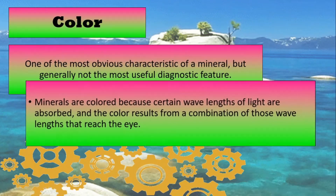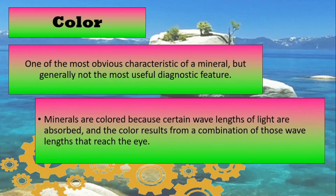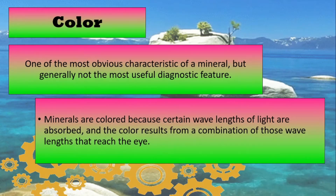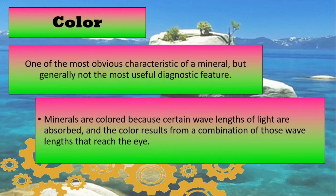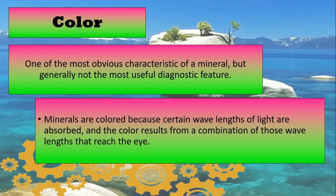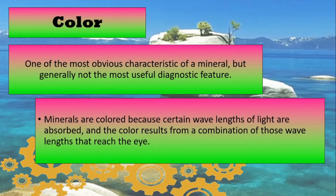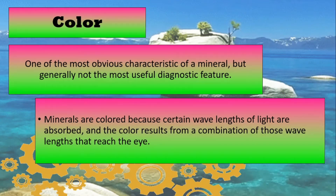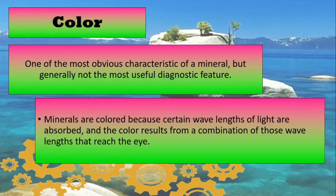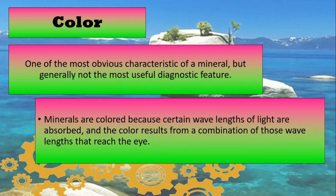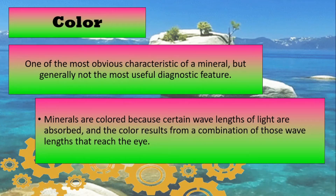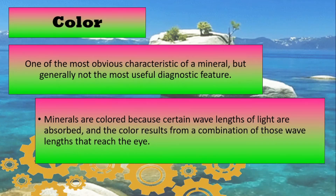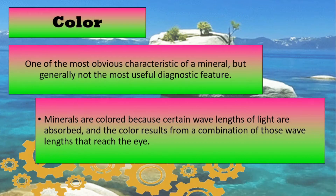Next, color. Color is one of the obvious characteristics of a mineral, but generally not the most useful diagnostic feature. Minerals are colored because certain wavelengths of light are absorbed, and the color results from the combination of those wavelengths that reach the eye.